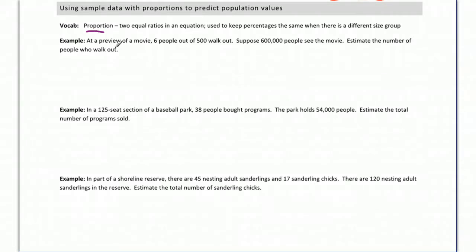And this is one of the benefits of sampling is that you can learn more about the whole group. So our vocab: proportion is two equal ratios in an equation. Now that might not mean much, but when you see what we're doing, you'll see basically two fractions set equal to each other. That's generally what we think of when we think of a proportion.